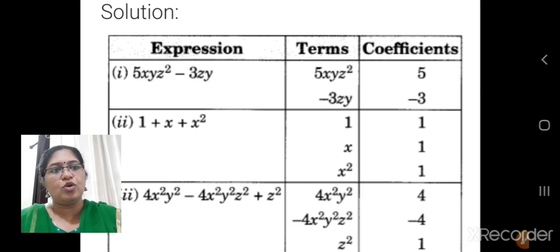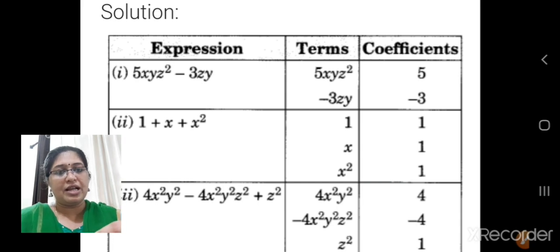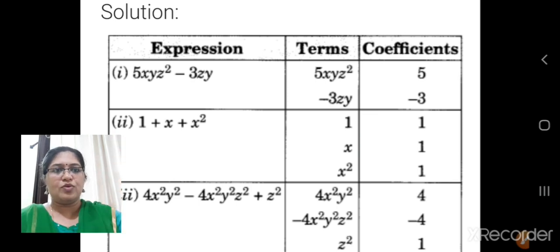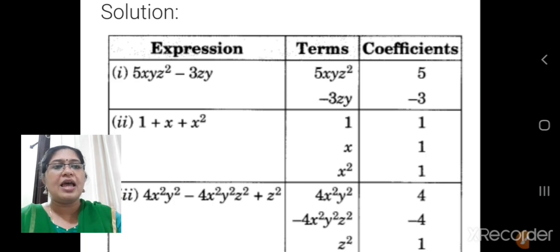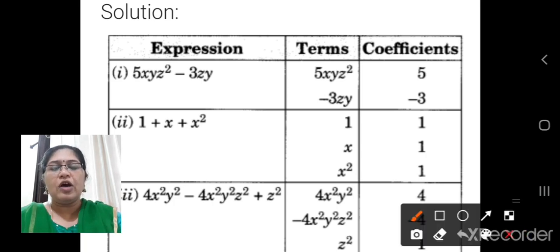How many terms are there? You should write them one by one, one after the other in the classwork note. That is 5xyz squared first, then you write minus 3zy. These are the two terms, and the coefficients are 5 and minus 3.